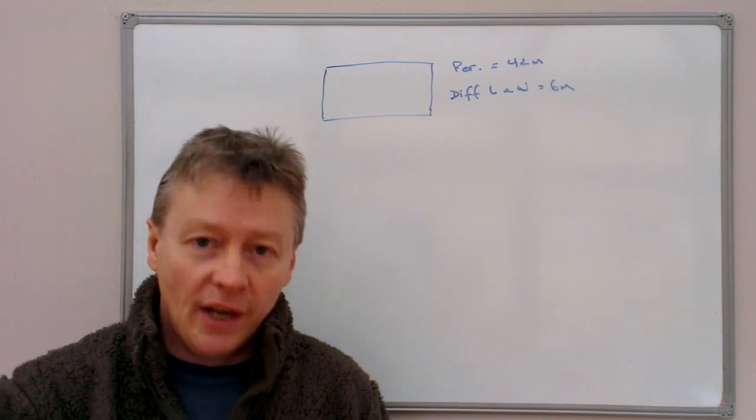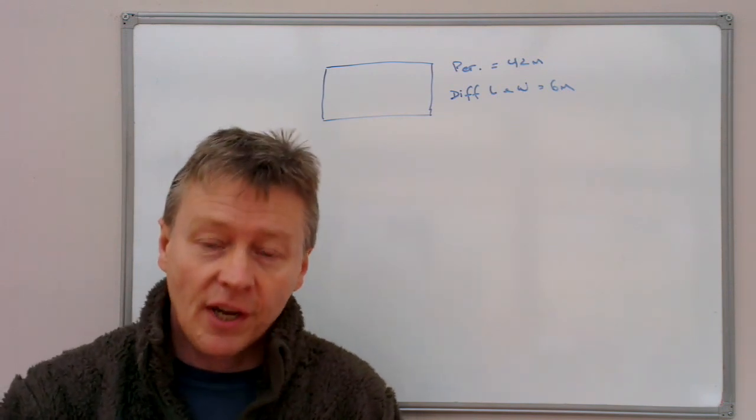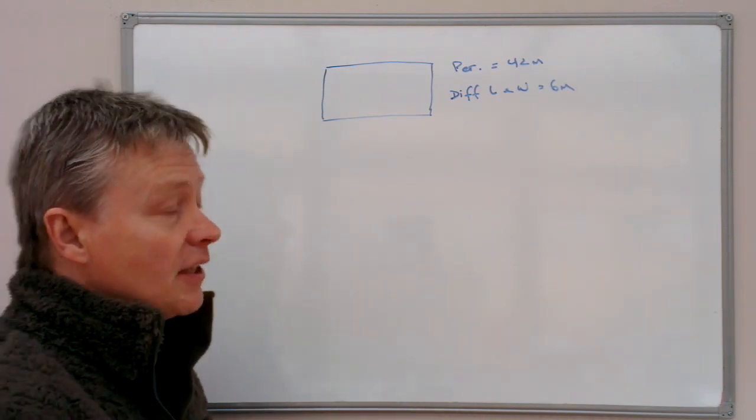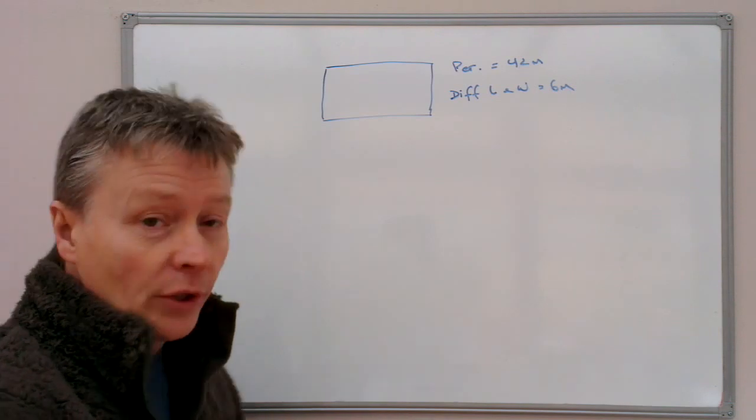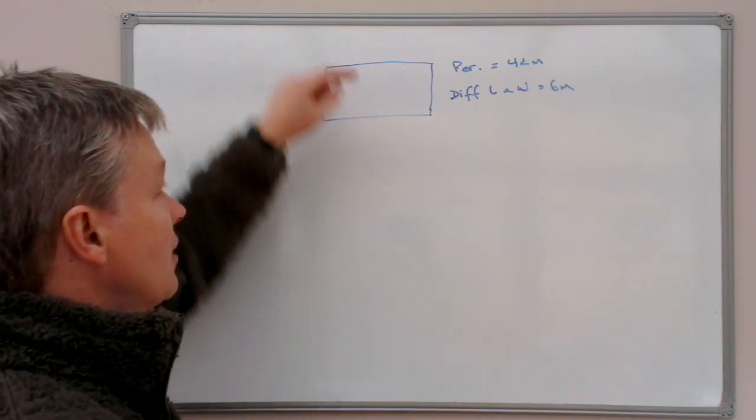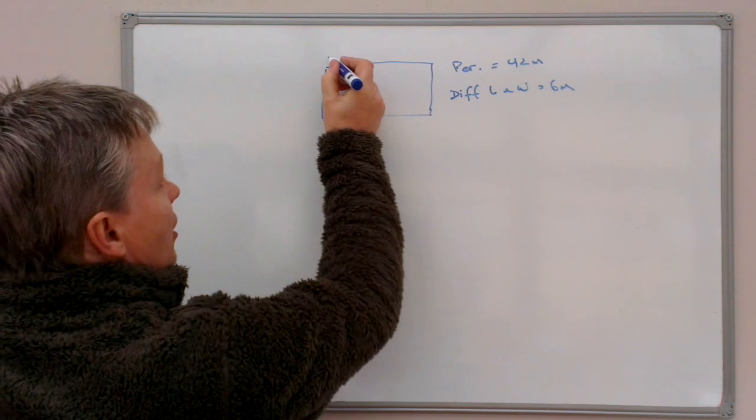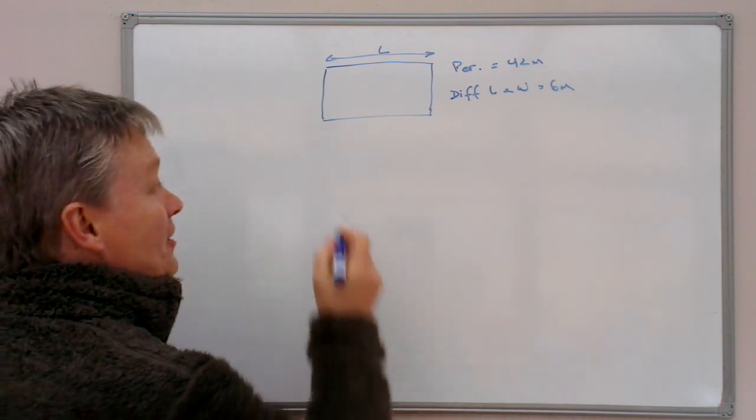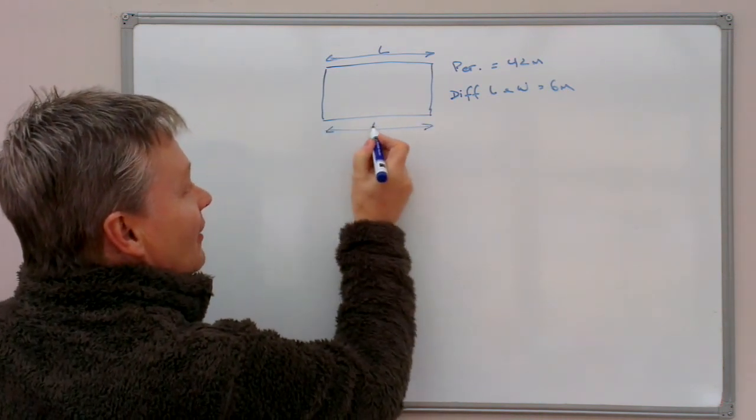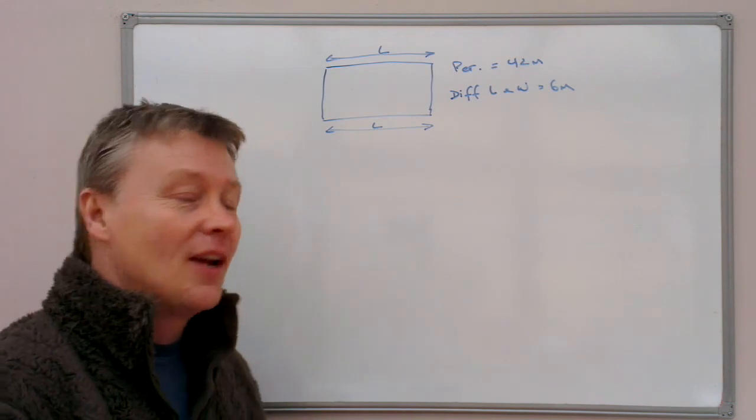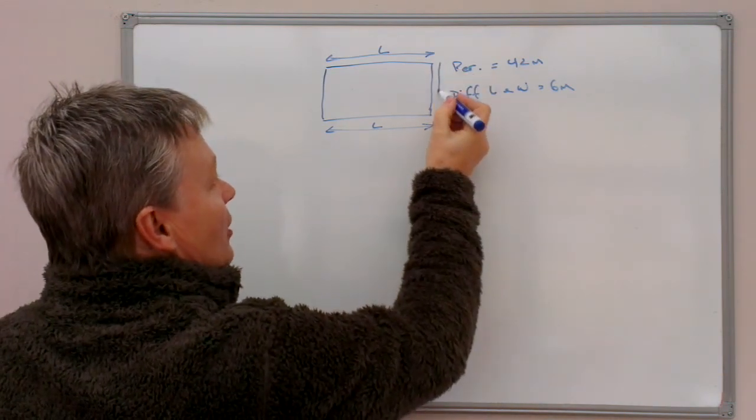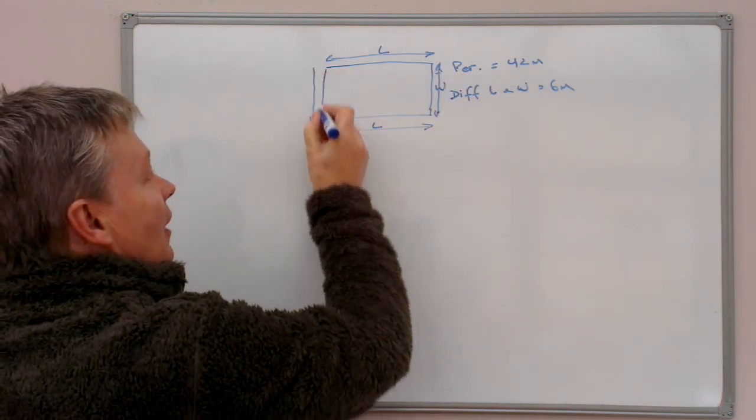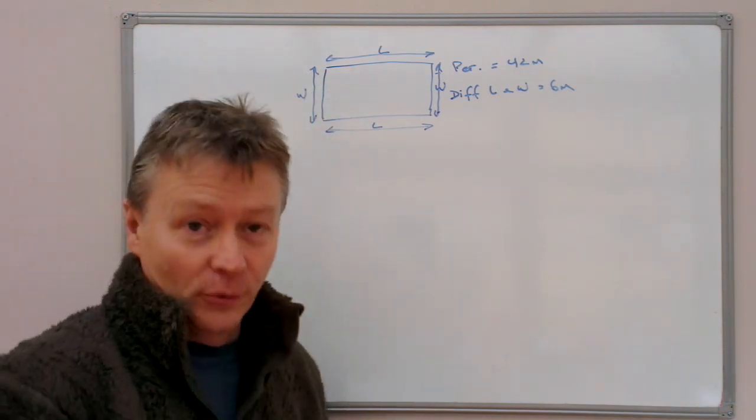But it will allow us then to create two simultaneous equations and solve for those simultaneous equations. So the first thing that we need to look at is we have a rectangle. And one of the properties of a rectangle is that this dimension along the top, which we'll call the length, is exactly the same as the dimension along the bottom. The dimension here, which is the width, is also the same as this dimension here.